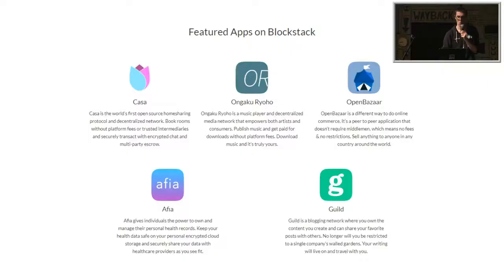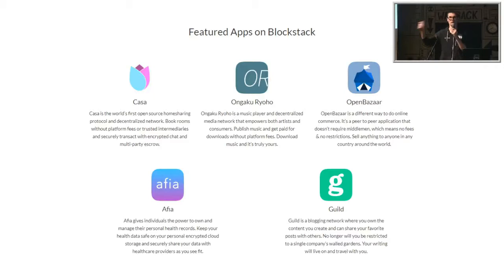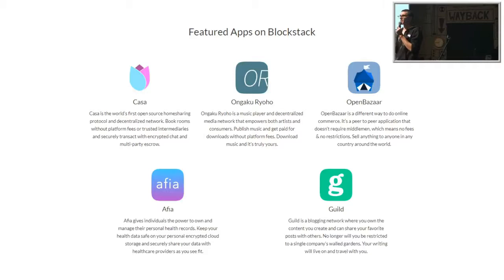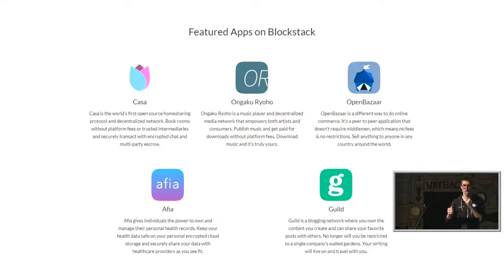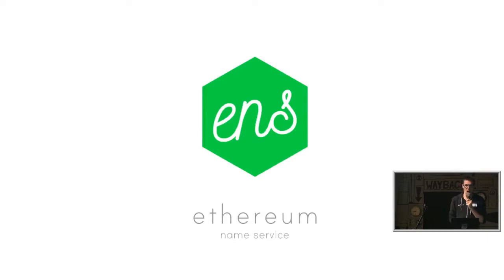Examples of apps built for Blockstack include Casa, a decentralized home-sharing protocol like a decentralized Airbnb; Ungakoriho, like a decentralized iTunes; OpenBazaar, like a decentralized Amazon; Athea, a decentralized network for managing and sharing personal health data; and Guild, like a decentralized Medium. More examples can be found at blockstack.org.